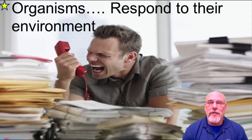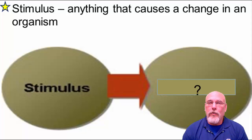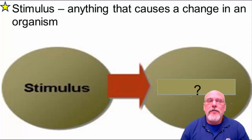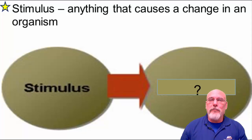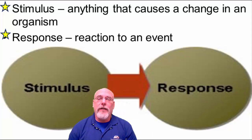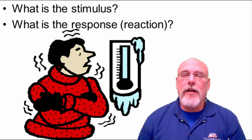First of all, we need to know that organisms, as a characteristic of living things, will respond to their environment. That's characteristic number four. A stimulus is something that will cause a change in an organism — it could be a very bright light, a loud noise, or somebody slapping you in the face. There are all different kinds of stimuli that an organism can experience, and that stimulus will cause a response, which is defined as a reaction to one of these stimulus events. So we have what's called stimulus response. What is the stimulus in a given situation, and what is the response?